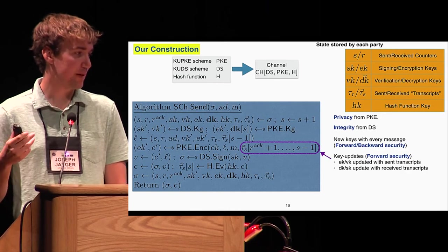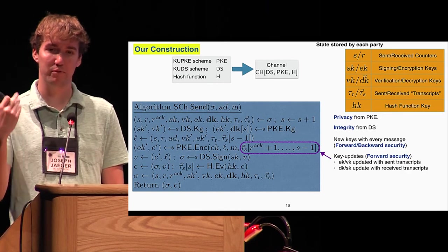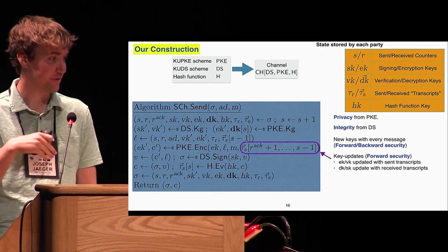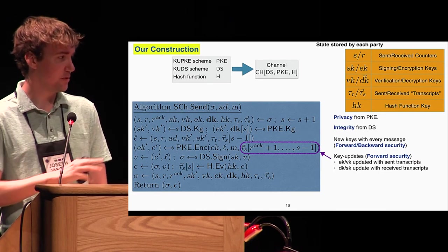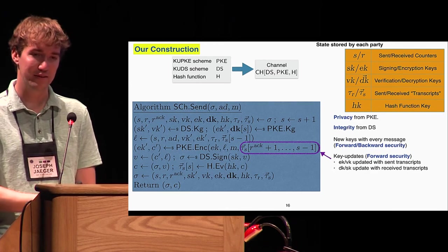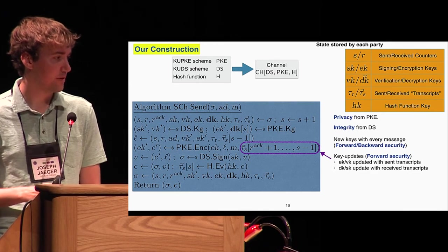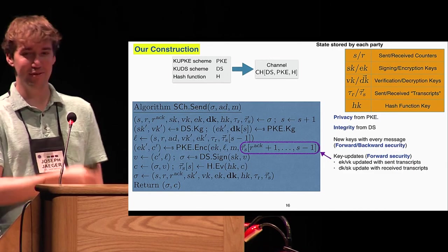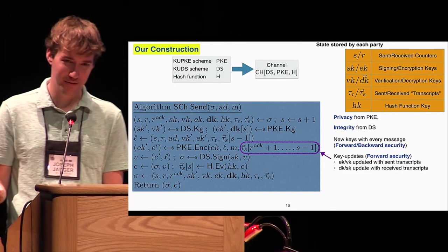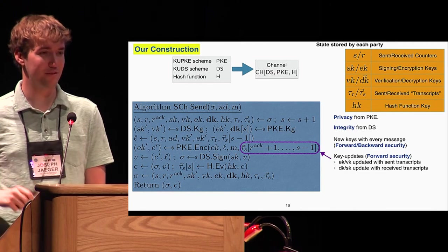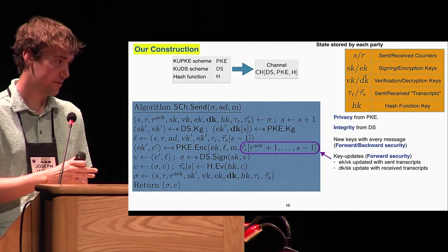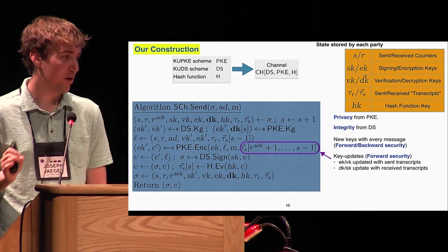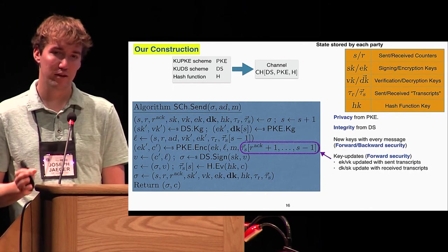The first main part of how we're achieving the forward and backward security is that with every ciphertext we send, we're going to include new encryption and verification keys for key pairs that we just generated. A more complicated part of the forward security is what we're achieving with the key updates. We're updating the public parts of our keys with the transcripts of what we've sent to the other user. We're updating the secret parts with the transcripts we've received, and the sorts of attacks which are being prevented by these key updates are the ones I talked about where if I expose one user's state, use that to send a forgery to the other user, the other user's state should no longer be useful in breaching security of the first user. Those somewhat complicated attacks are what the key updates really are preventing.